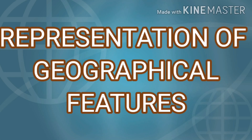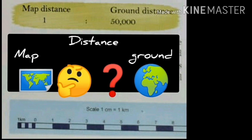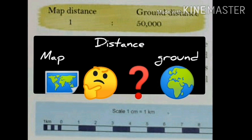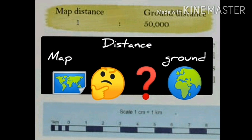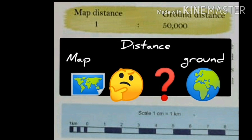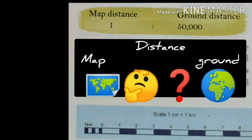Students, we are learning about the representation of geographical features. We are going to learn about the use of scales on a map. Distance is an important component of a map. What is the distance between Kerala and New Delhi? How much distance is there between India and America? How is this distance represented on a map? Today we can learn about how to represent distance on a map.